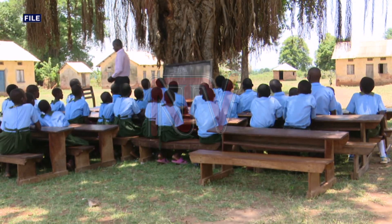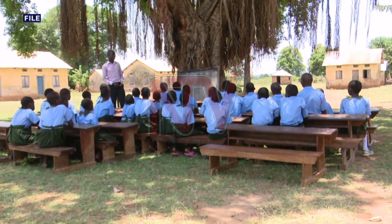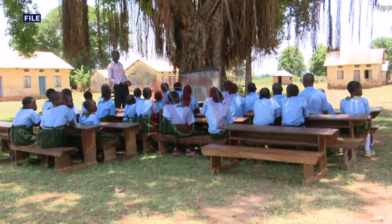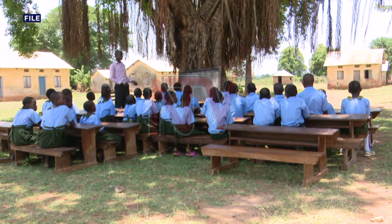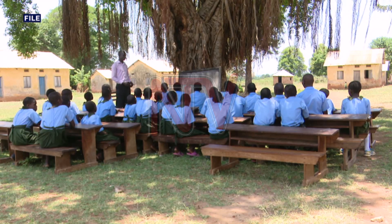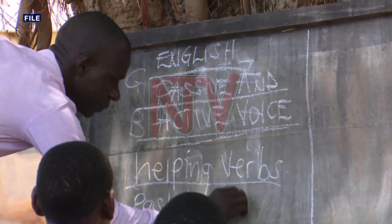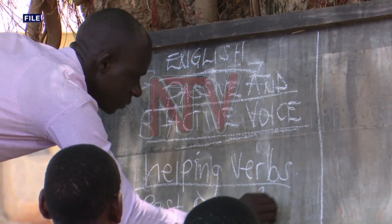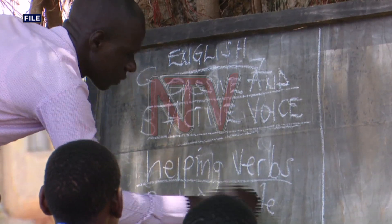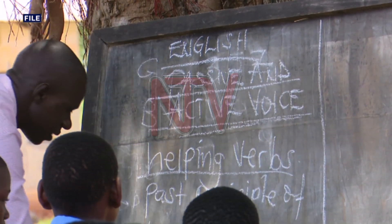In many parts of the country, from lower primary — that is P1 to P3 — a local language is supposed to be used as a medium of instruction. From P4 to P7, a local language is supposed to be taught as a subject, even though it is not examinable for primary leaving examinations.